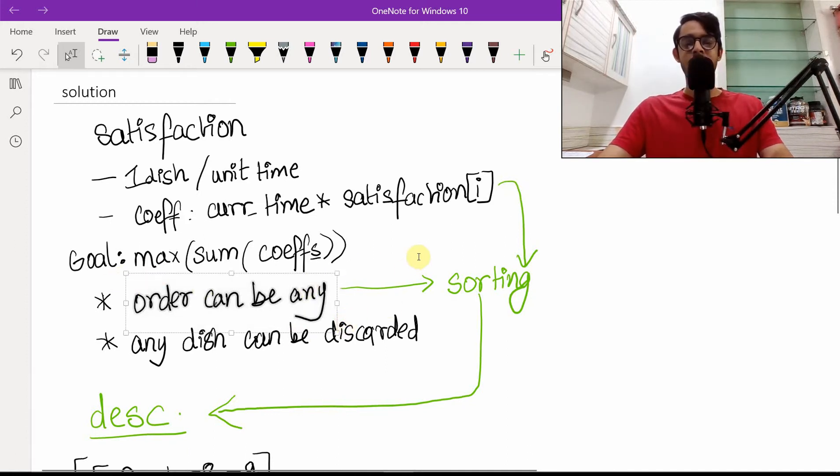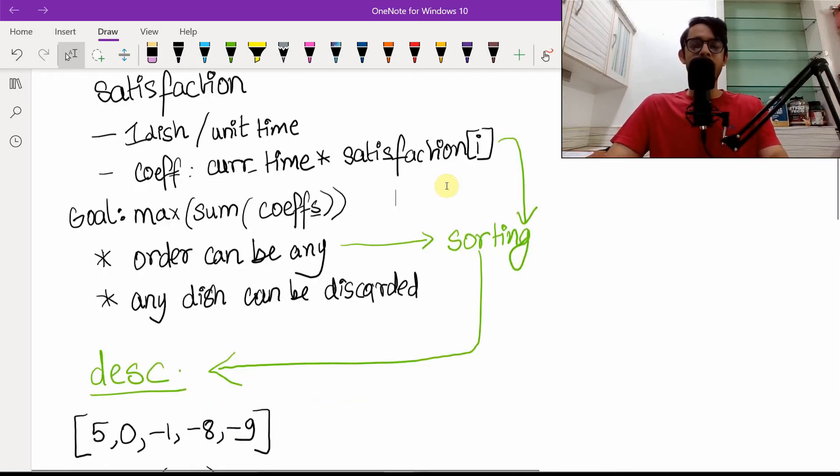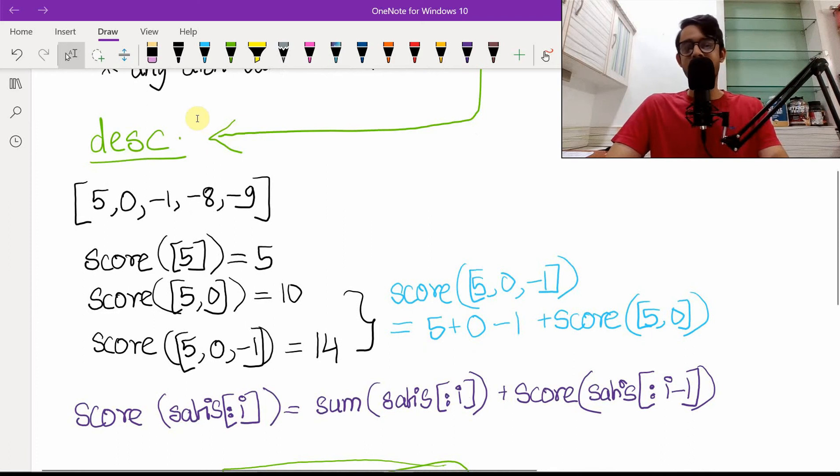In any question that says order is not important, sorting is like one go-to thing you should think about. So we'll think about sorting in this case. It's going to make sense because you have the current time with you which you can always increase by one, and the satisfaction you can obviously sort and get the best possible times. We're going to sort this in descending order.